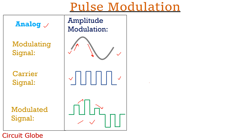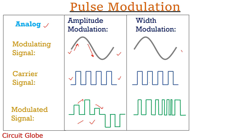Coming to PWM, that is pulse width modulation. This is our modulating signal, this is our carrier signal, and this is the modulated signal. As the name indicates, in pulse width modulation, the width of the pulsed carrier signal is varied according to the amplitude of the message signal. The amplitude remains constant even when the width shows variation. When the amplitude increases, the width of the carrier signal increases, making that pulse wider. In a similar way, as the amplitude of the message signal decreases, the width of the pulses also decreases, and we get this kind of modulated signal.